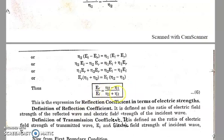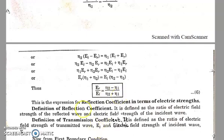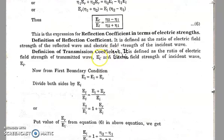Upon solving these equations, we get ER / EI = (eta2 - eta1) / (eta2 + eta1). This ratio is called the reflection coefficient in terms of electric field strength. It is defined as the ratio of the electric field strength of the reflected wave to the electric field strength of the incident wave. Similarly, the transmission coefficient is defined as the ratio ET / EI.